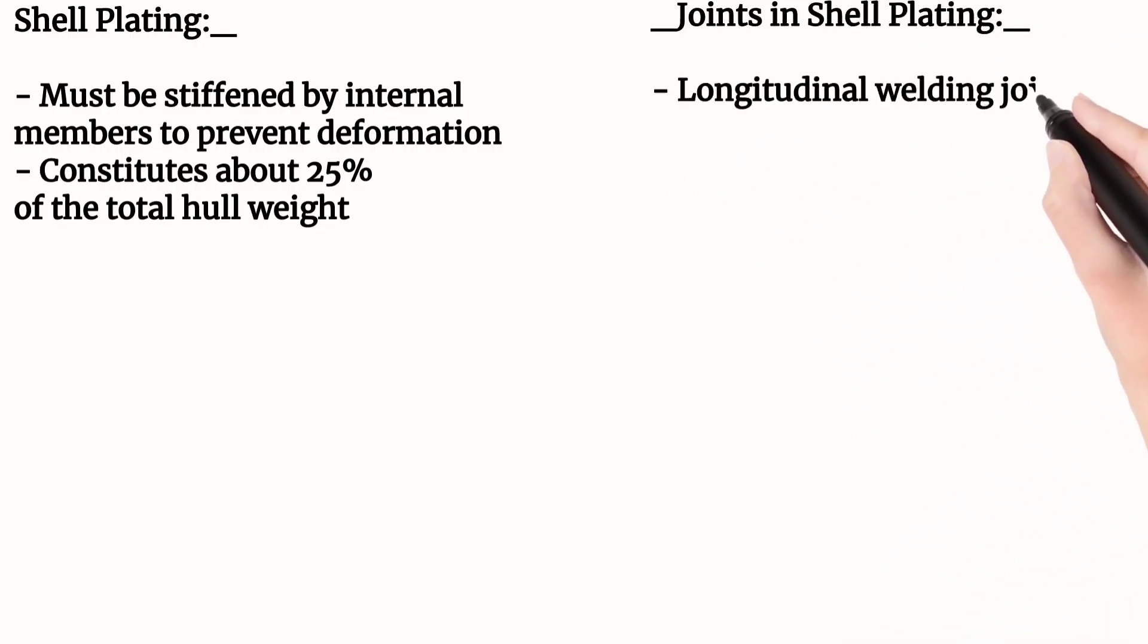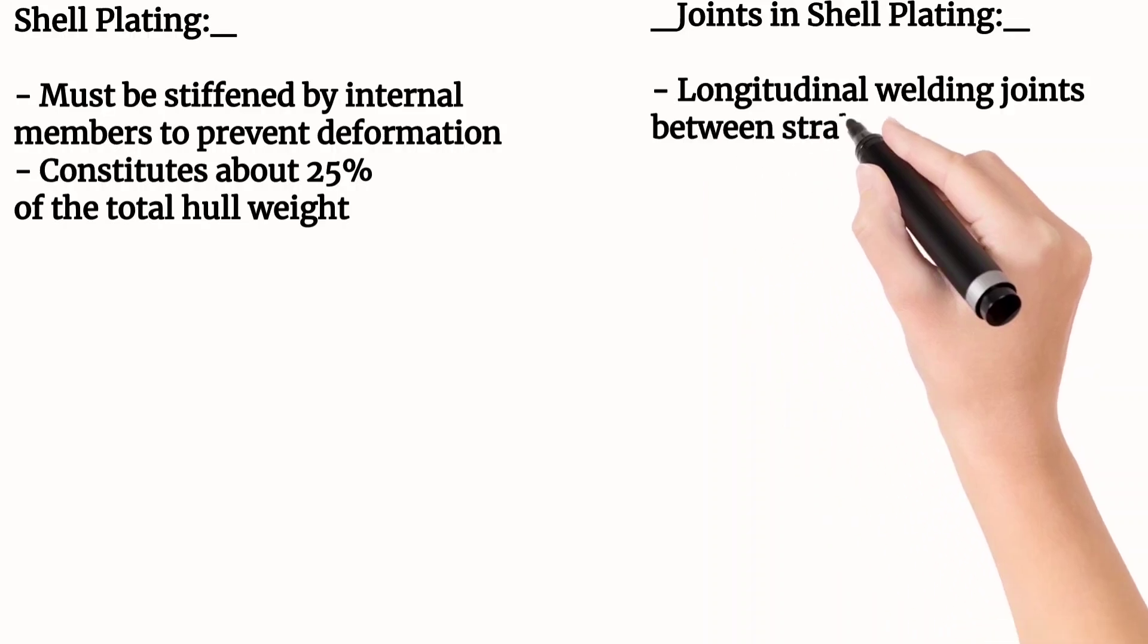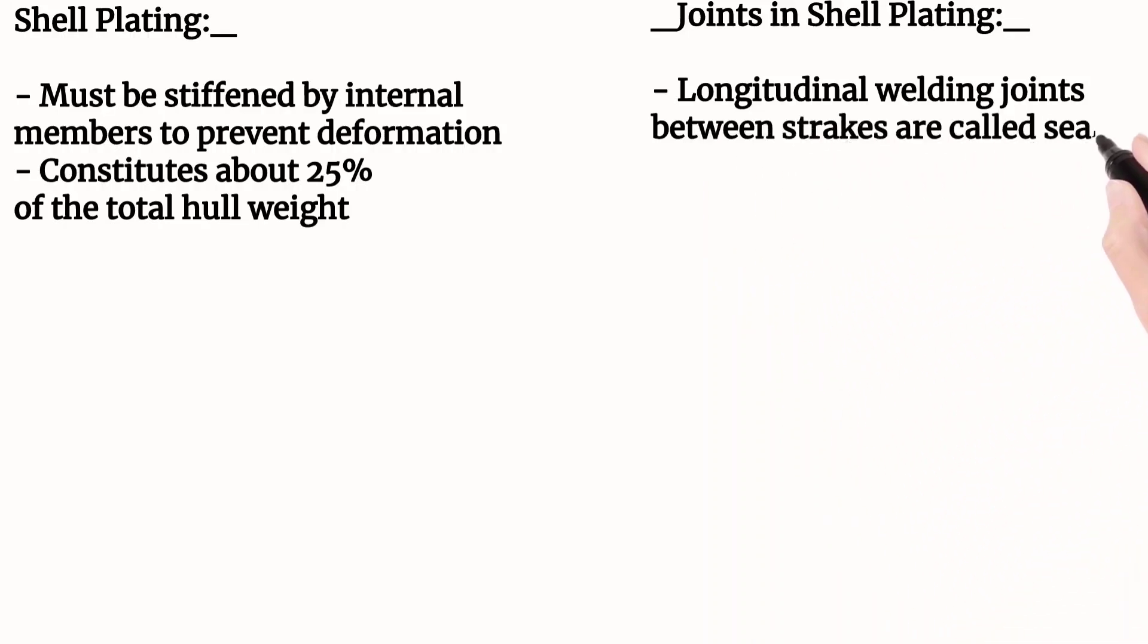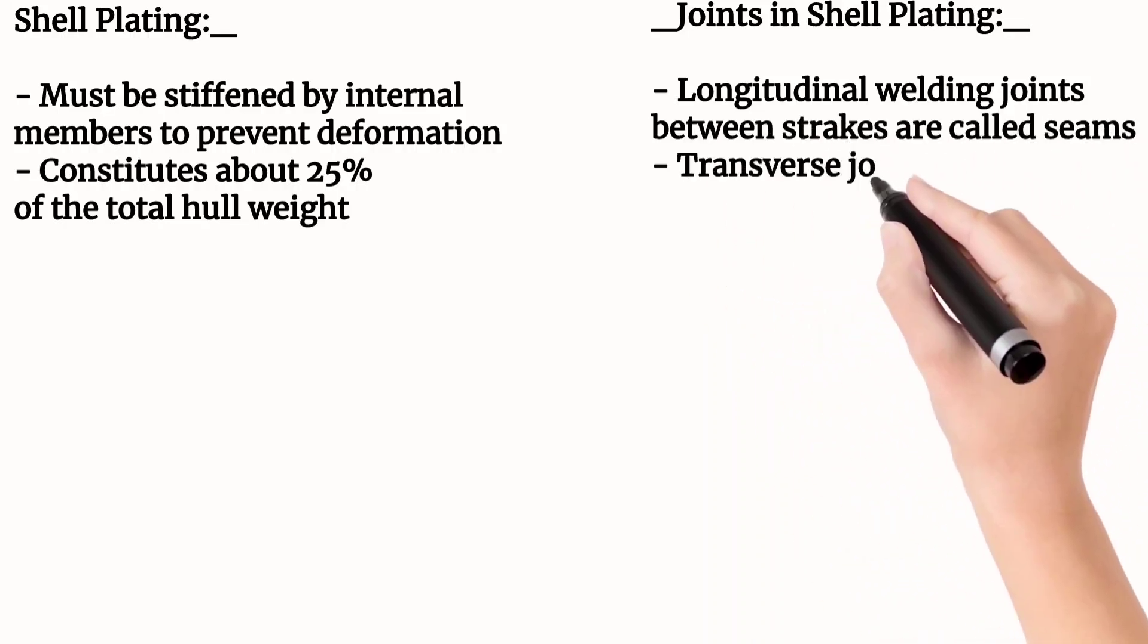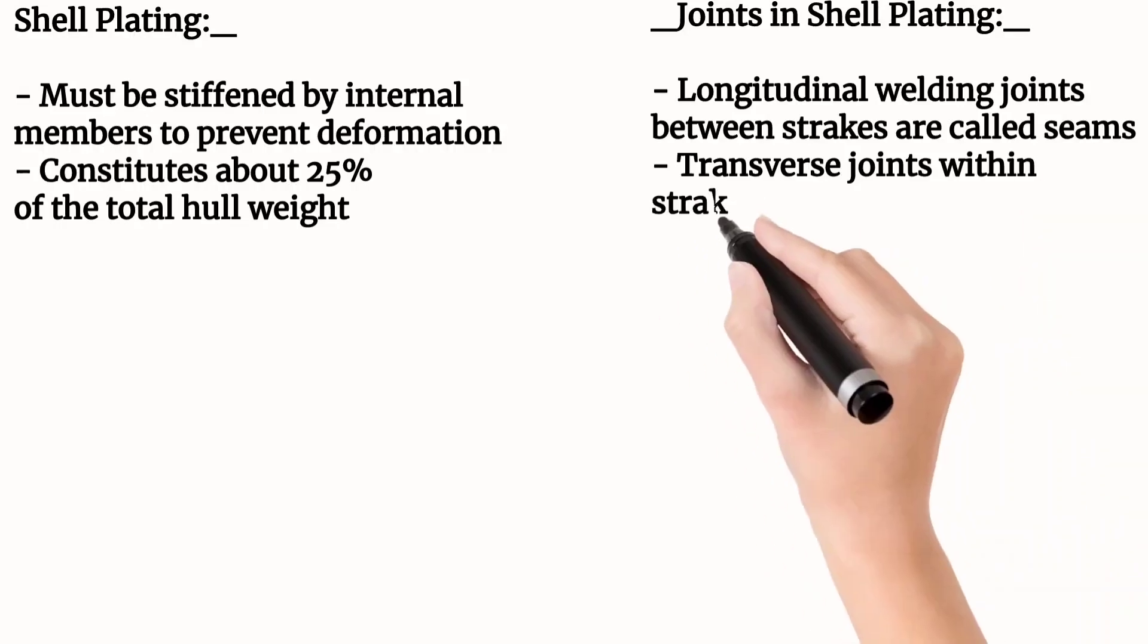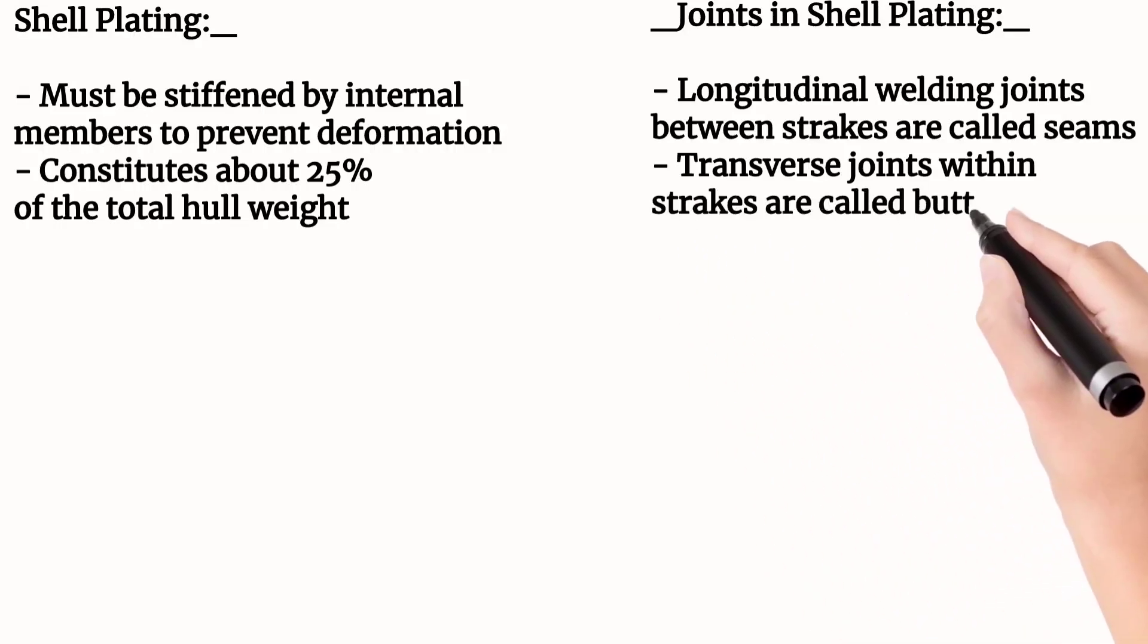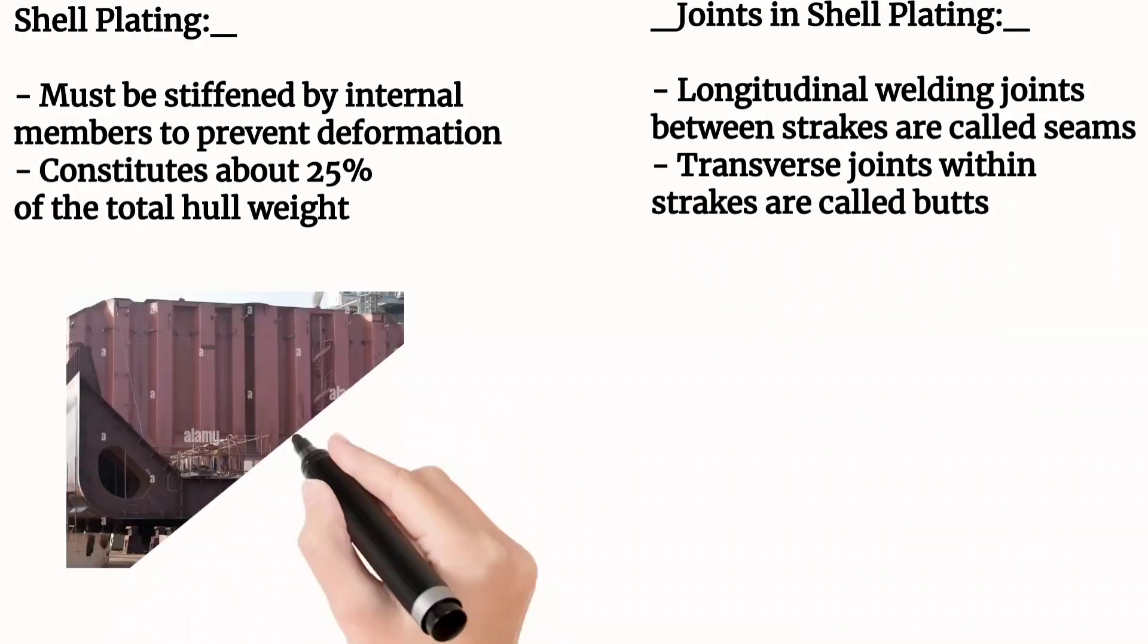Now let's see the joints of shell plating. The longitudinal welding joints between the streaks are called seams, and the transverse joints within the streaks are called butts.